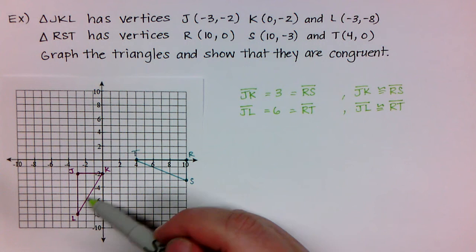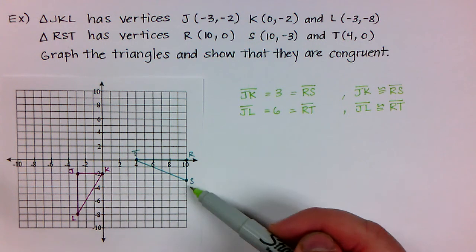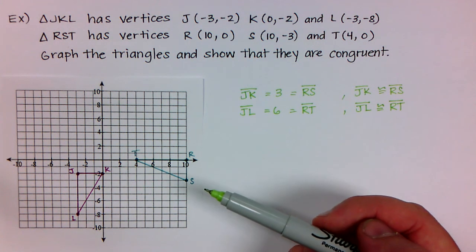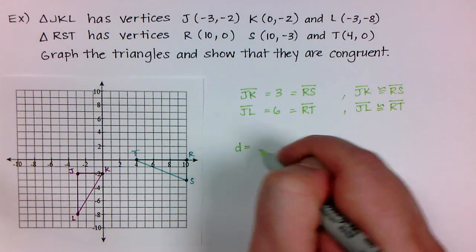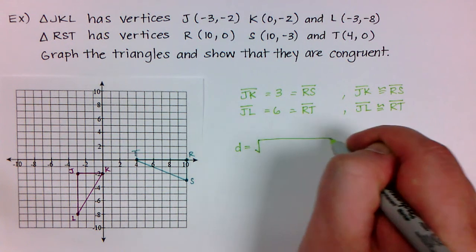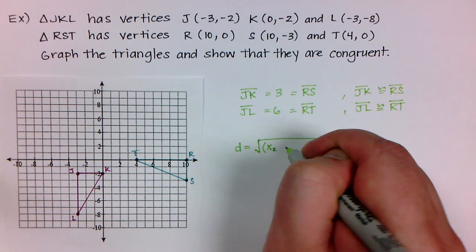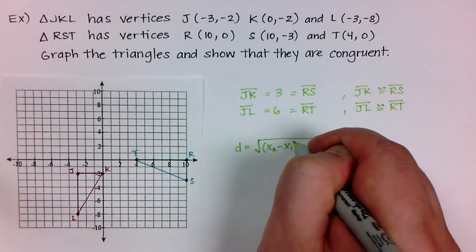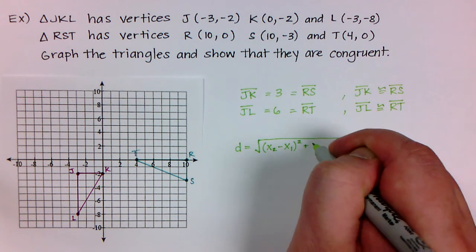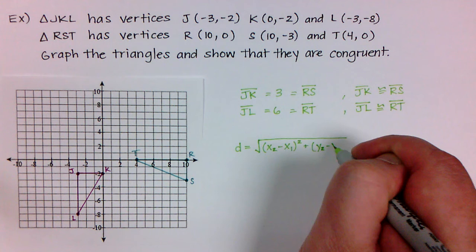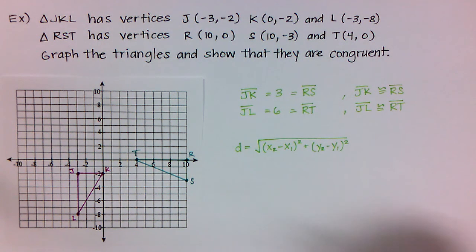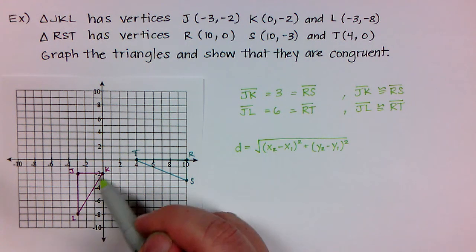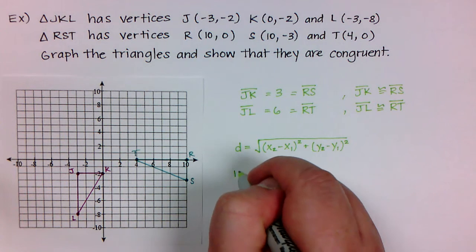But how can I find the distance for the diagonal line completing both triangles? This is where we have to go back to the distance formula. The distance from one point to another is the square root of the difference of the x-values squared added to the difference of the y-values squared. Let me find the distance from K to L.